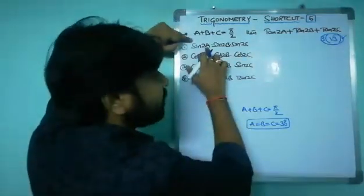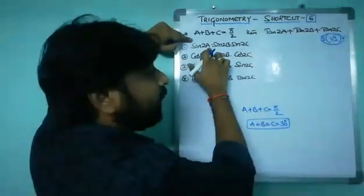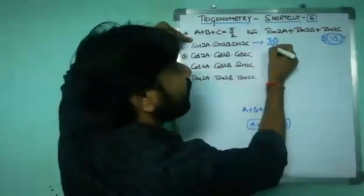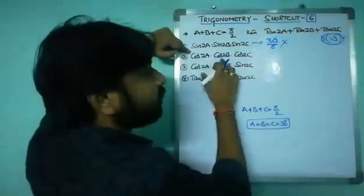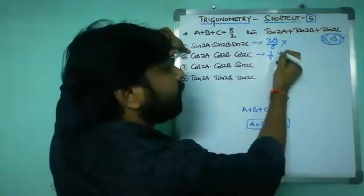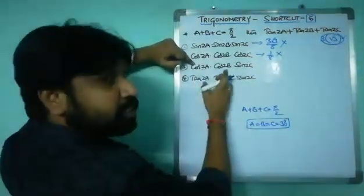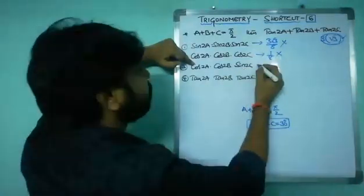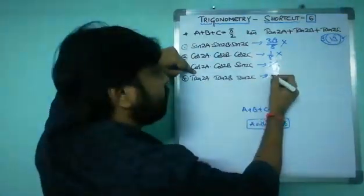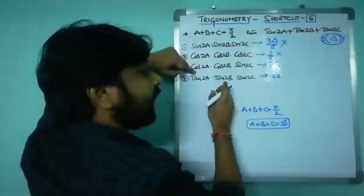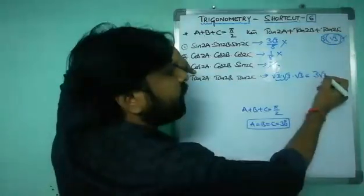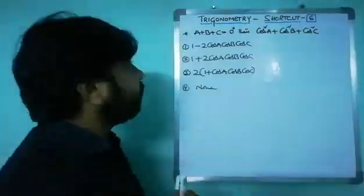Checking option with sine: sine(2×30)=sine 60=√3/2, three times gives 3√3/8 — clearly wrong. Option with cos 60: (1/2)³ gives 1/8 — clearly wrong. Option with cos 60 and sine 60 combined: 1/4 × √3/2 — also clearly wrong. Option with tan 60: tan 60=√3, so √3×√3×√3=3√3. Yes, this option is correct — the fourth option is the correct answer.